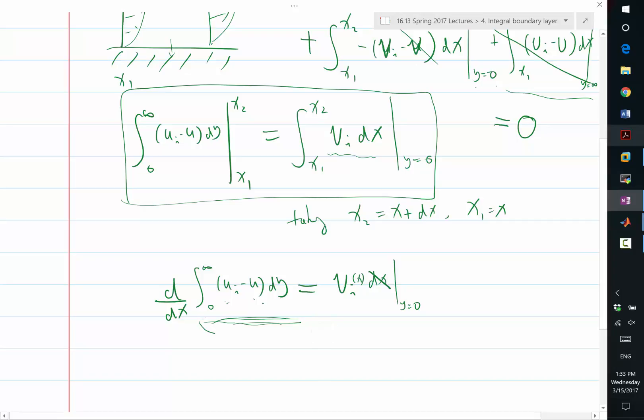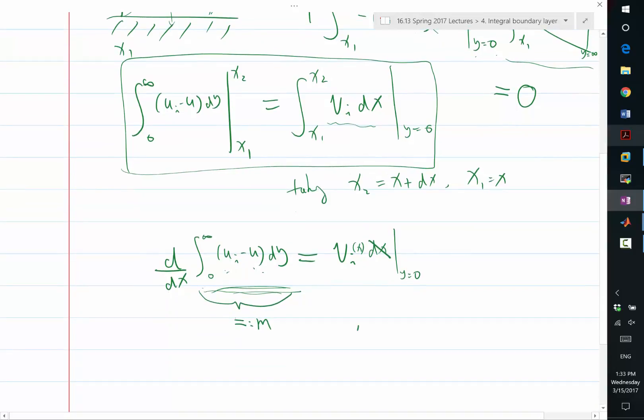So if I define this to be, let's say, m, then I know that vi at y equal to 0 is equal to dm/dx. And m basically quantifies how much defect is in the mass flow of the boundary layer.